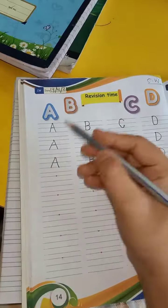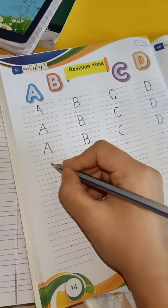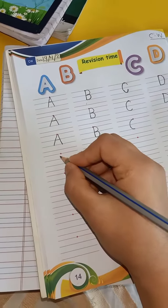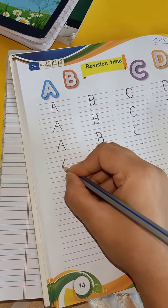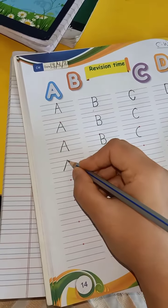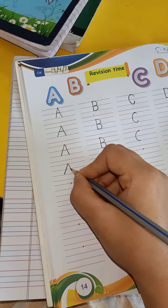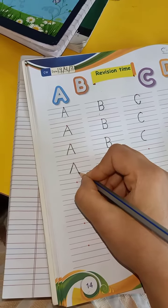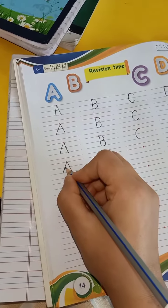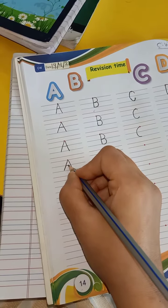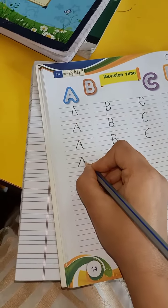Okay, so how to write letter A? Look at here. Make a slanting line from capital line to base line. Then make a second slanting line from capital line to base line and make a slipping line. It's a letter A.